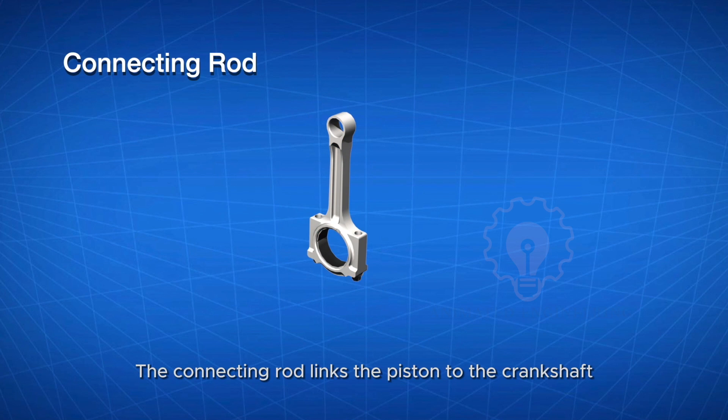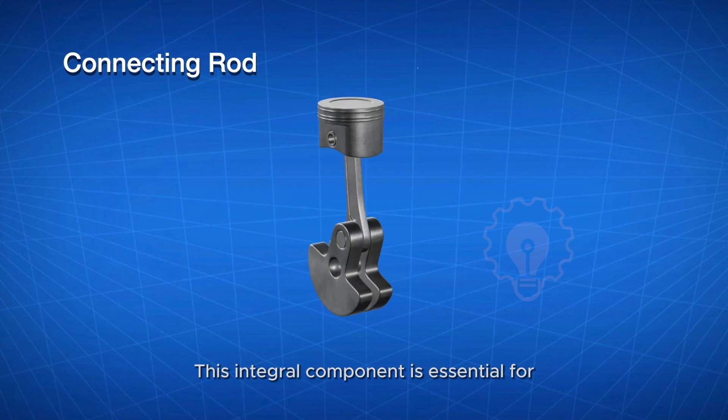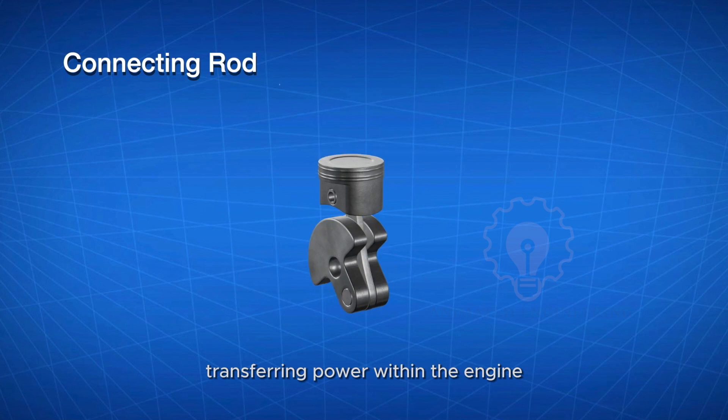Connecting rod: The connecting rod links the piston to the crankshaft, converting linear piston motion into rotational motion. This integral component is essential for transferring power within the engine.